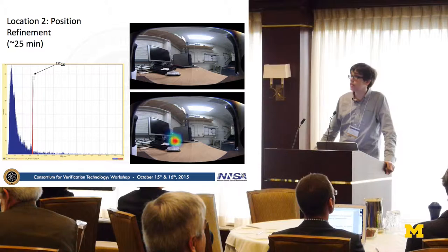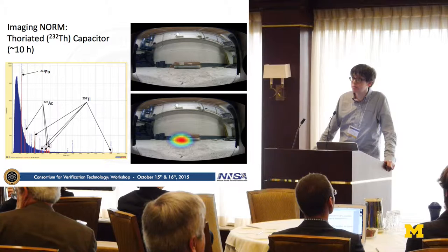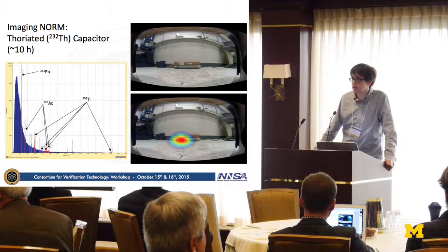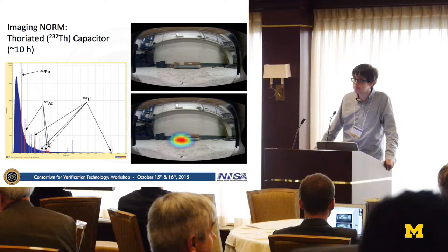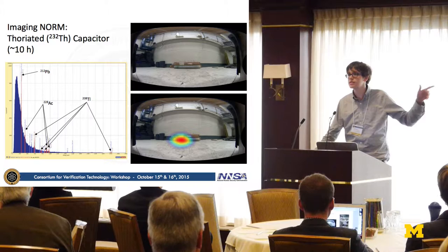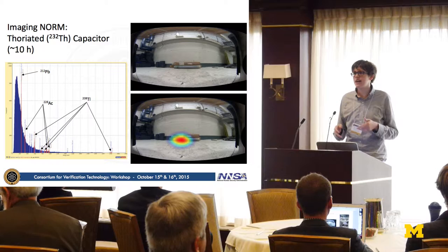Next, we imaged NORM. NORM is interesting to image since there are multiple radionuclide peaks from the progeny, and you can image each peak individually or all at once. We used a thoriated capacitor in our lab as a thorium standard. I placed it on the ground and imaged it overnight for about ten hours. As you can see, you get an image on the left side of the capacitor. We actually didn't know the activity was localized to the left side — we confirmed it with other detectors and found the left side is about twice as active as the right.